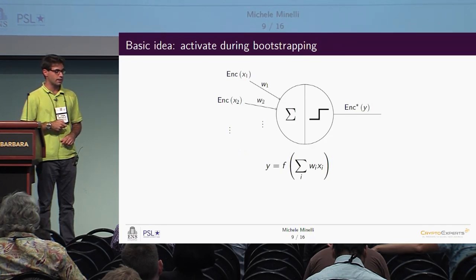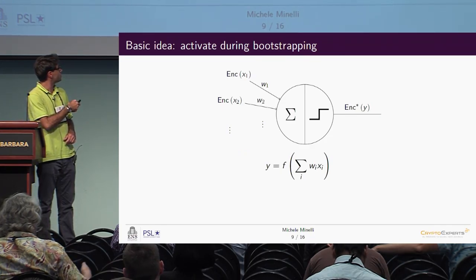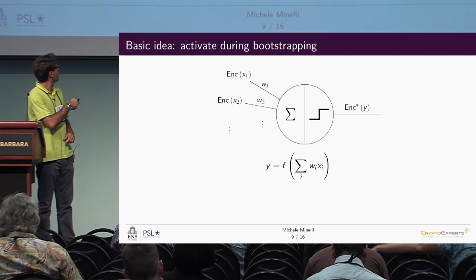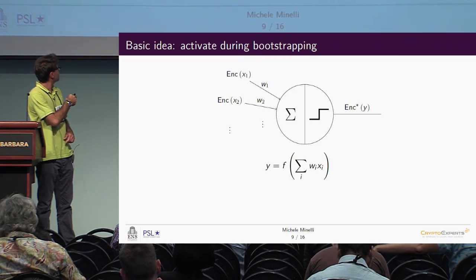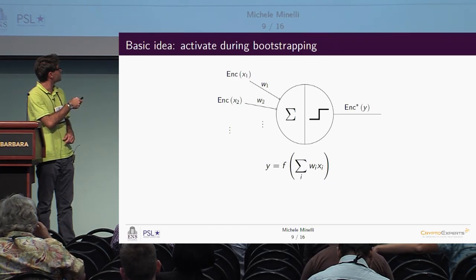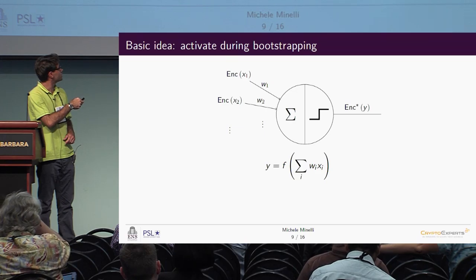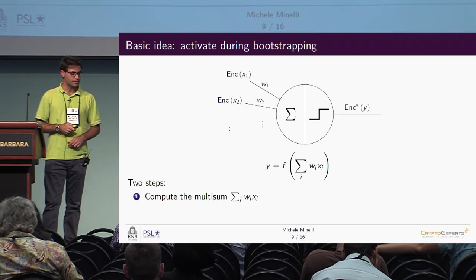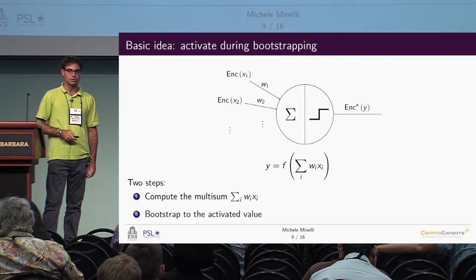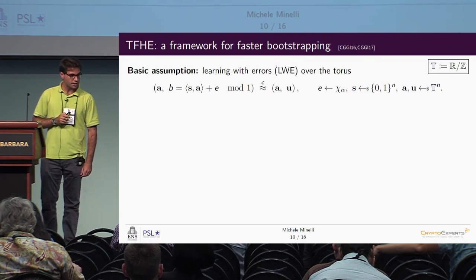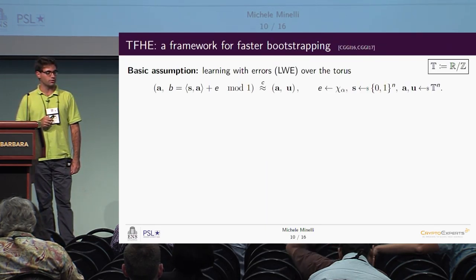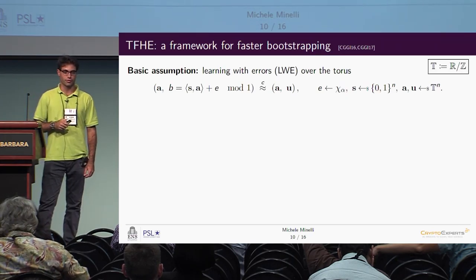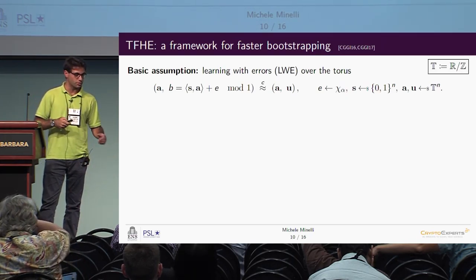What happens is: encrypted inputs come in, they are weighted, activated, and refreshed — two steps: compute the multisum, then bootstrap to the activated value. The starting point is TFHE — TORUS Fully Homomorphic Encryption — a work by Chillotti et al. presented in 2016, which is nowadays the fastest implementation of the bootstrapping procedure. The basic assumption is LWE over the torus, where the torus is the reals modulo one.